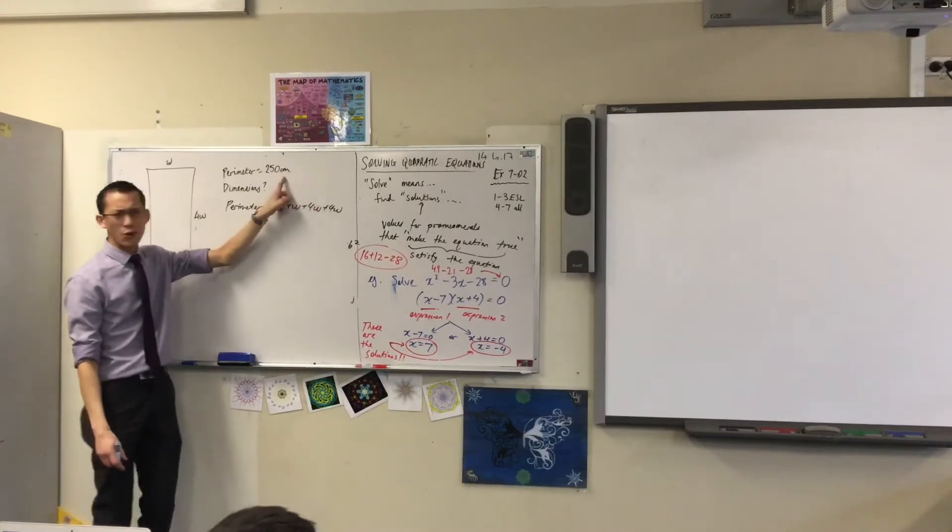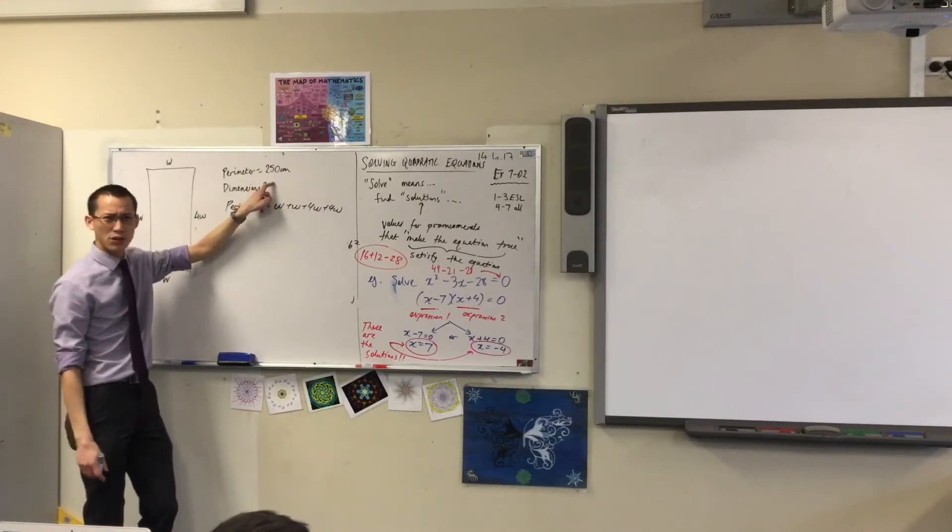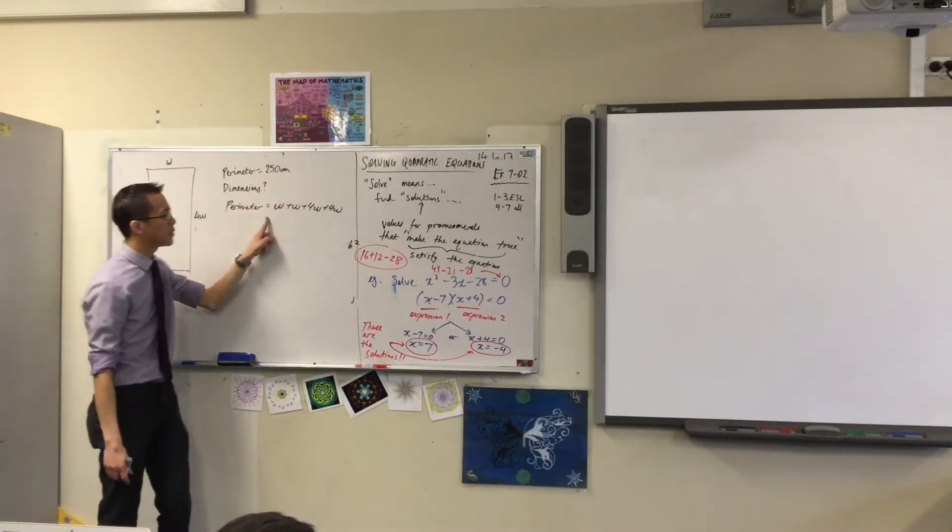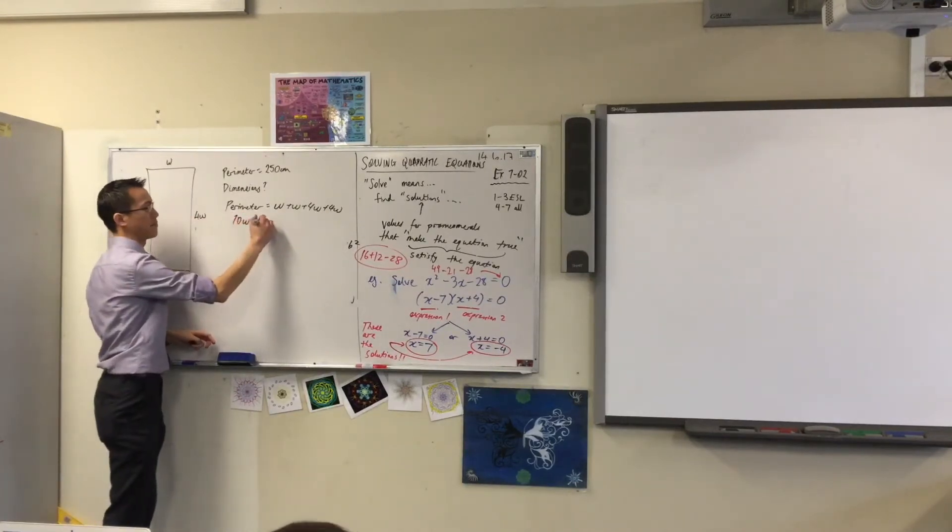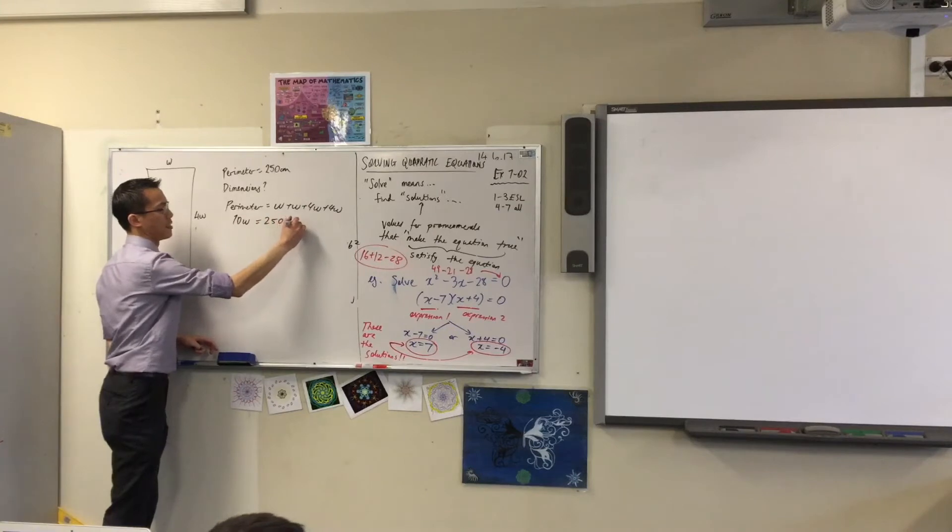But that's already a known number. I know that's equal to 250 centimeters, right? So, how many W's do I have on the right-hand side? Ten. There you go.